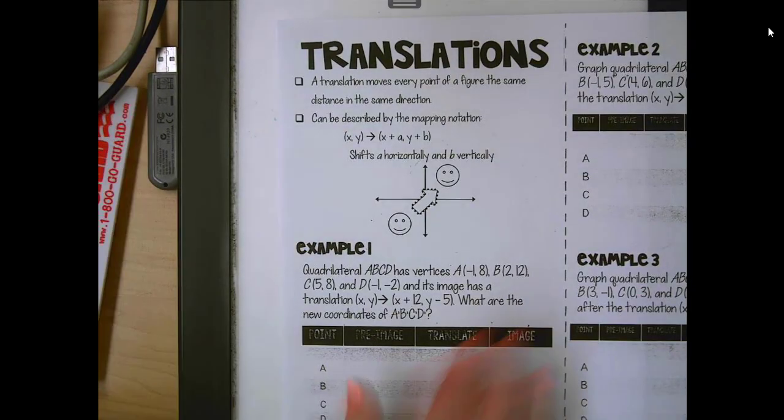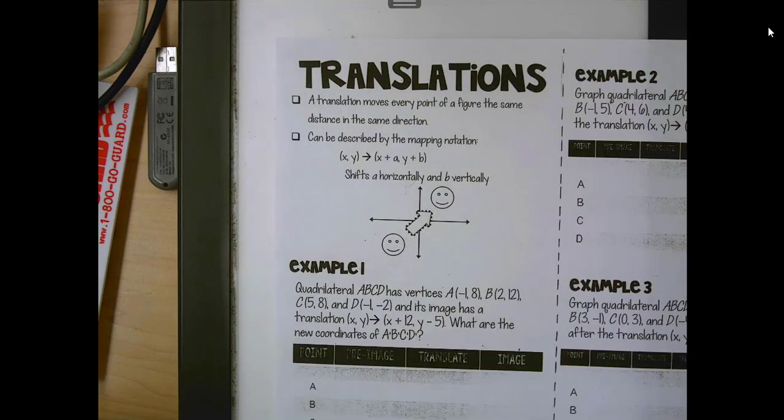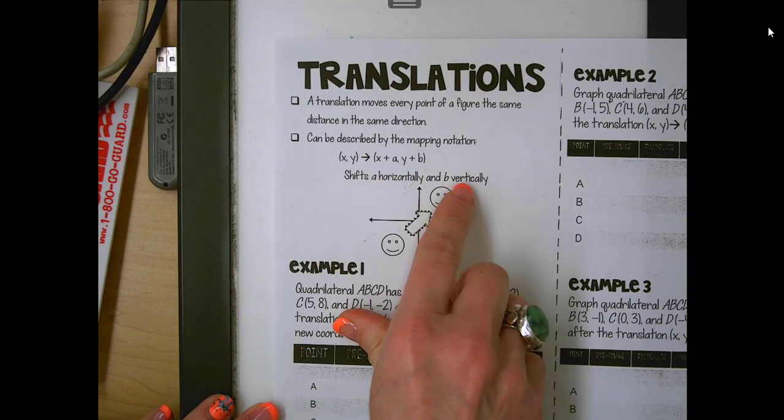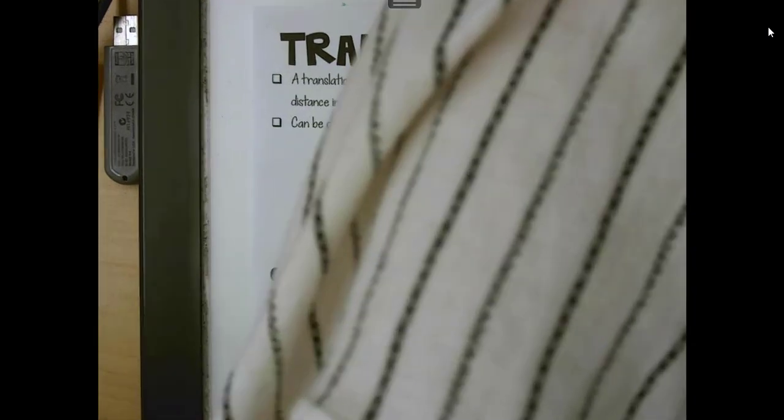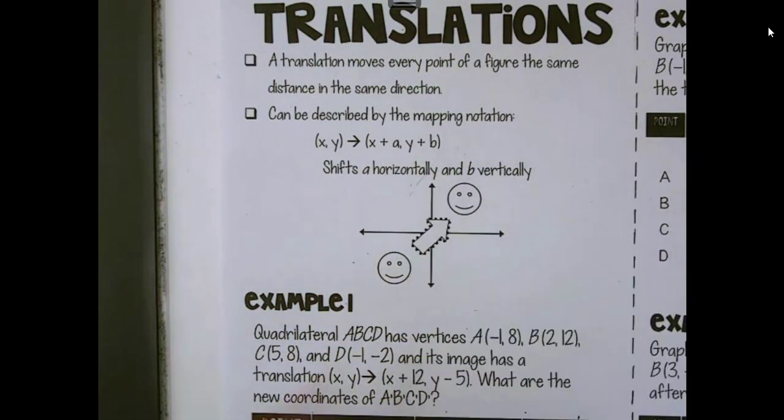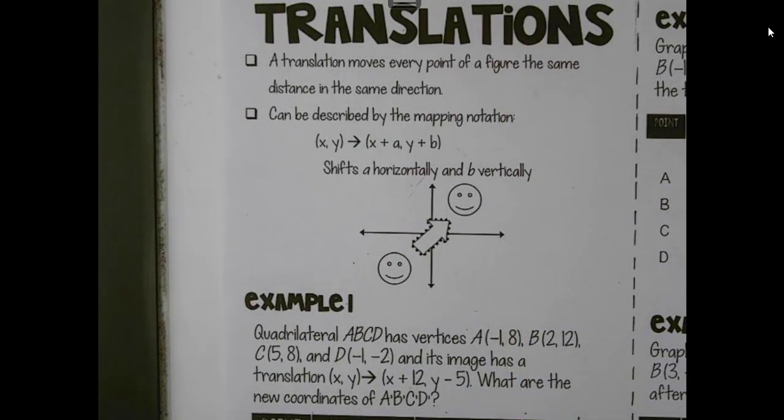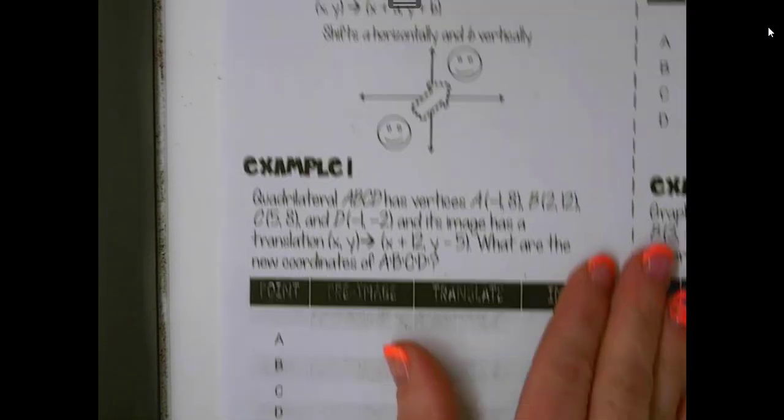Now, a translation is really just a slide. It's the same shape. We're just going to put it somewhere different on the coordinate system. So we're going to move this object in the same direction and the same distance, and how we can describe it. We're doing something with x, which is moving it left to right, and then we're doing something to the y, which is moving it up or down. It can move just left or right, or it can move just up and down, or it can do a combination.